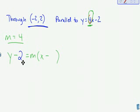So it's y minus 2 equals 4(x minus negative 2). Minus the negative 2 is plus. The m was our slope. We said that has to be 4 if I want to be parallel to this other line.